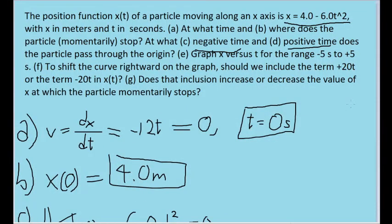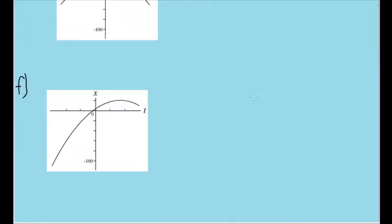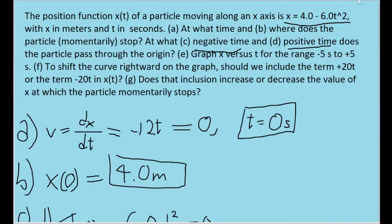For Part F, we're asked to shift the graph rightwards by either adding a plus 20t term or a minus 20t term. Once again, you kind of just want to experiment with a graphing calculator here. And you will see that in order to get the graph to shift to the rightwards like this, you'll want to add a plus 20t term to the function.